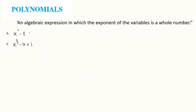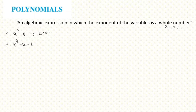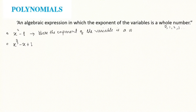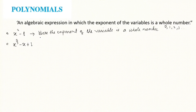In polynomials, the variable's exponent must be a whole number — like 0, 1, 2, 3. Fractions and negative numbers are not allowed as exponents. So looking at the first expression, the exponent of the variable x is 2, which is a whole number. Therefore, this is a polynomial.